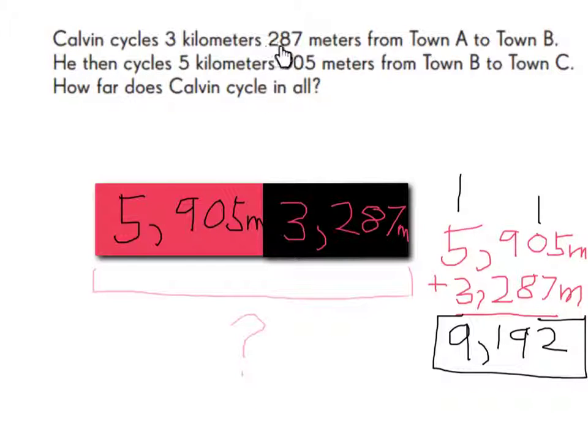Calvin cycles 3 kilometers 287 meters from Town A to Town B. He then cycles 5 kilometers 905 meters from Town B to Town C. How far does Calvin cycle in all? So 5,905 meters plus 3,287 meters equals 9,192 meters.